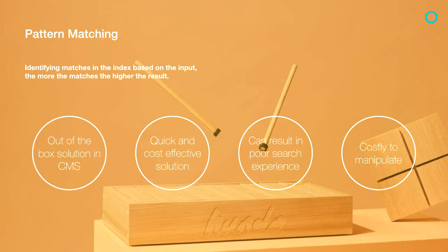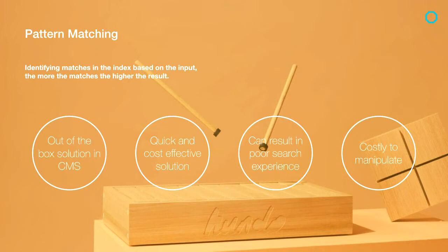Pattern matching is a quick and cost-effective method of implementing on-site search, but it's not wonderfully sexy — I'm not a great big fan of it. It can result in a really poor user experience; we've all seen results and wondered how on earth that got to the top of the list. There's no visibility into how the result set gets returned. It's also quite costly to manipulate if you want to customize it, and it tends to incur technical debt because you have to manipulate the core.